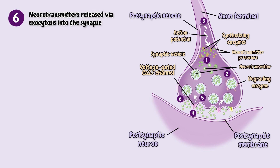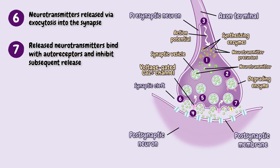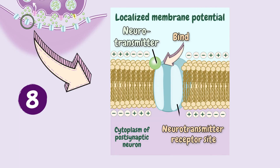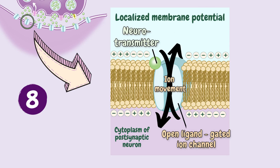Number six, the neurotransmitters are now released into the microscopically small space between the two neurons, known as the synaptic cleft. Number seven, here they bind with autoreceptors and inhibit subsequent neurotransmitter release. Number eight, the released neurotransmitters then head over to bind to receptor sites on the postsynaptic neuron. This binding of neurotransmitters opens ligand-gated ion channels, resulting in graded potentials, as you see here.